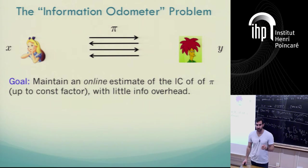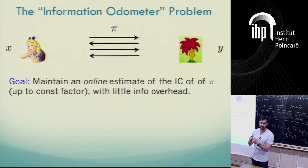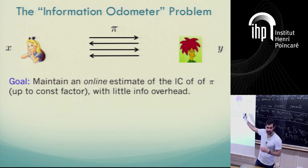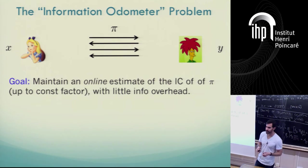And they want to do this while revealing as little as possible additional information. This is essentially the primitive we'll be looking to implement in this talk. We will see that having such a primitive has applications to privacy, to direct sum or product theorems, and to potential applications to interactive compression.